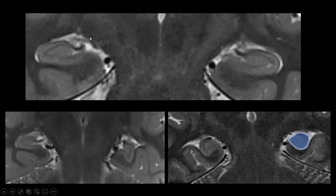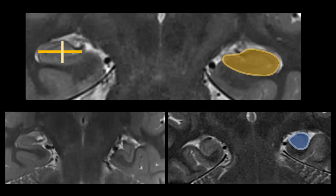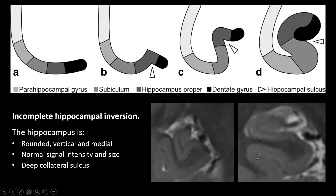Looking at hippocampal morphology, we can see two normal hippocampi that differ in shape. One is pretty wide but not very tall — an ovoid shape. The other has a more globular shape and is about as wide as it is tall. This is called an incomplete hippocampal inversion — basically a variation of the normal hippocampal shape. To understand how this occurs, we need to understand hippocampal embryological development.